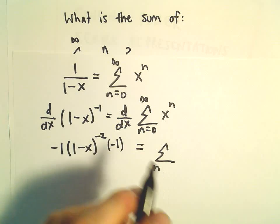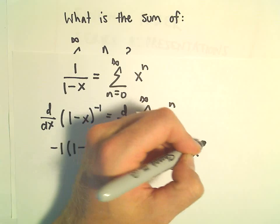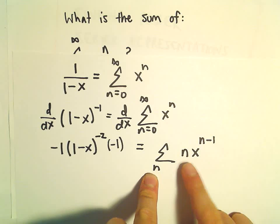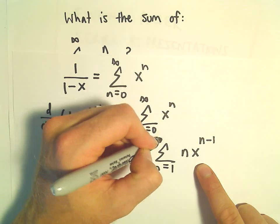On the right side, I'm going to think about my index here in a second. x to the n, when we take the derivative, we'll get n times x raised to the n minus 1. So notice if we started this at n equals 0, the first term would be 0, so I'm just going to start this at n equals 1.